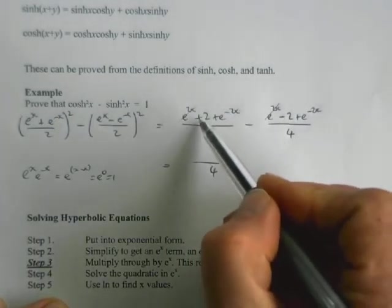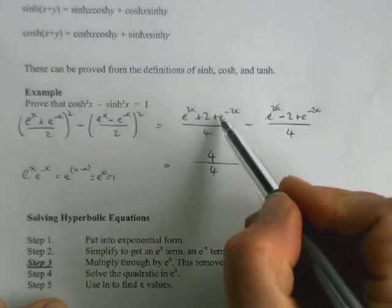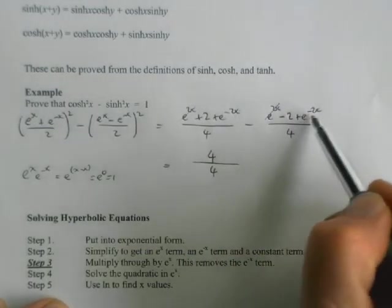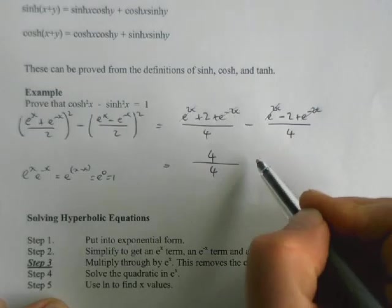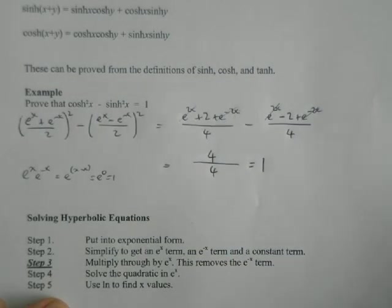That minus that: 2 take away negative 2 is positive 4. And e^(-2x) minus e^(-2x), those cancel out. So we get 4 over 4, which we'll rename as 1, conveniently.